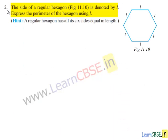Now moving on to question number 2. The side of a regular hexagon in the figure given is denoted by L. Express the perimeter of the hexagon using L. Now moving on to the solution.